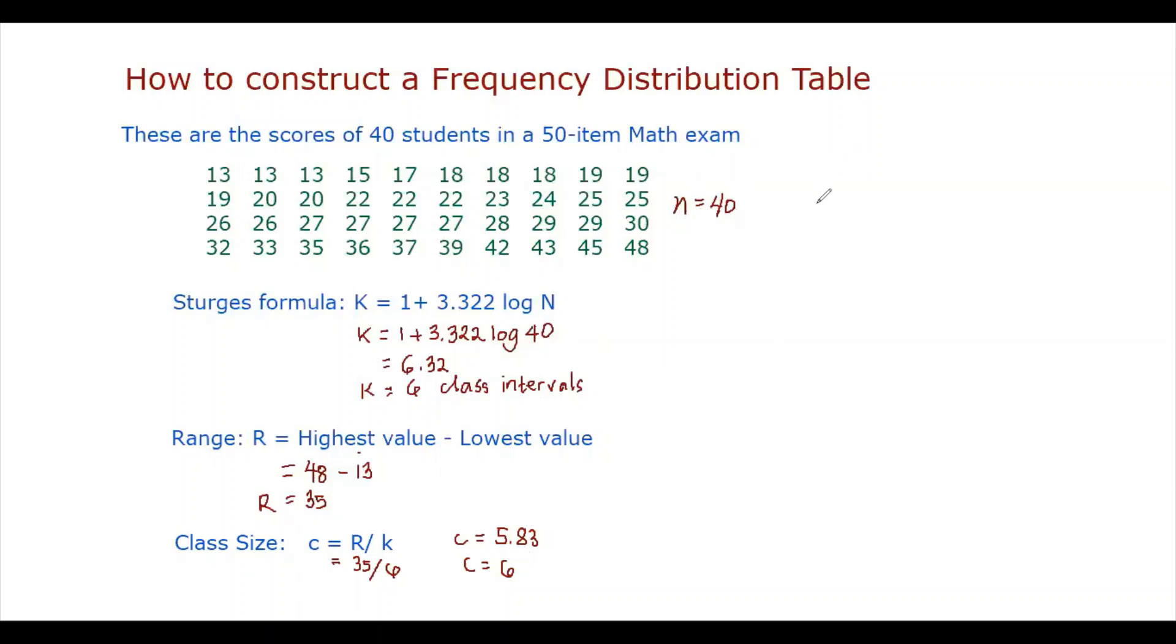Now we are going to construct our frequency distribution table. So we have our intervals. So the intervals will have lower class limits and upper class limits. And if we're going to arrange our distribution in increasing order, we have to start with the lowest value. So our lowest class limit is 13.